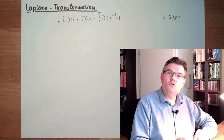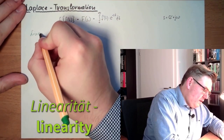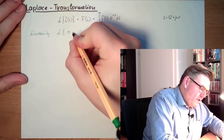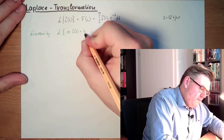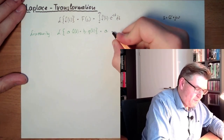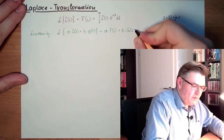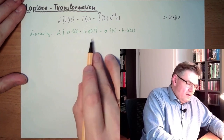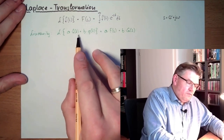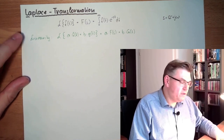One of these properties is linearity — the Laplace transformation is a linear transformation. This means if we do the Laplace transformation of A times f plus B times g, we end up with A times F(s) plus B times G(s). The linear factors simply stay, additions simply stay, and the functions are simply translated one by one. Linearity: one property of the Laplace transformation.